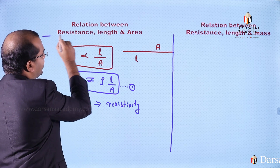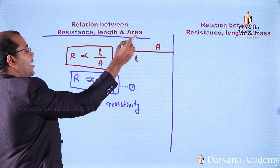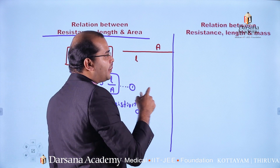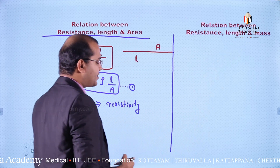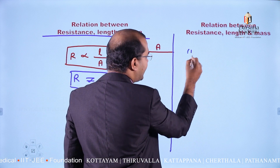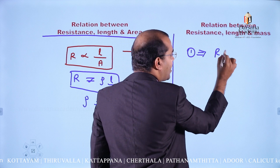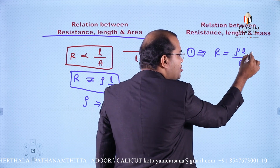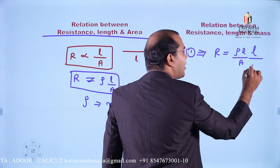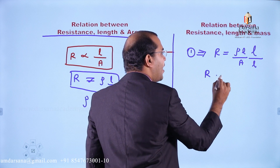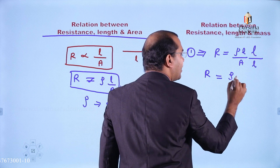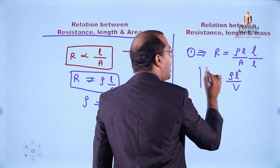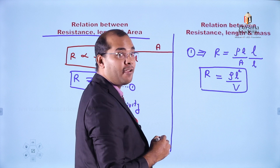The second relationship is between resistance, length, and mass. From equation 1, R equals ρL divided by A. We multiply numerator and denominator by L to balance: this gives ρL² divided by A×L, and A×L is the volume. So R equals ρL² divided by V.